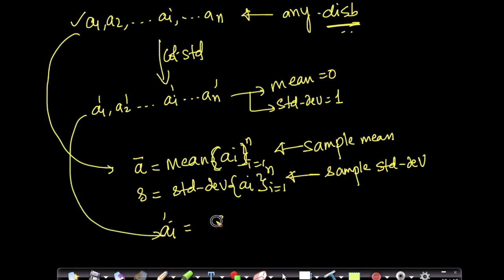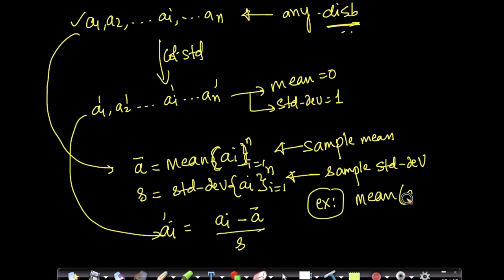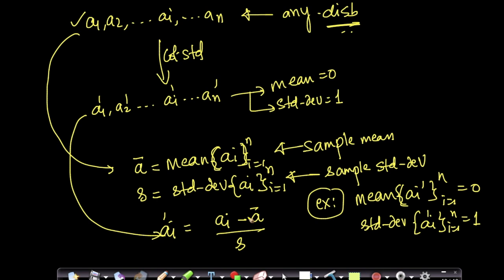The formula to compute ai' is: take each ai, subtract ā, and divide by the standard deviation s. So ai' = (ai − ā) / s. This guarantees — you can verify it as an exercise using simple algebra — that the mean of the ai' values equals 0 and the standard deviation of ai' equals 1.